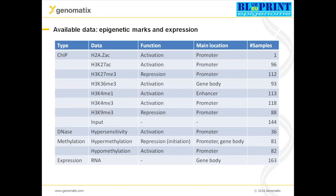The available data include ChIP data for a number of different histone marks — marks for active transcription or for repression of transcription — as well as input DNA for the ChIP-seq data. Then you have DNase I hypersensitivity regions, hypermethylation and hypomethylation regions, and expression data as well.